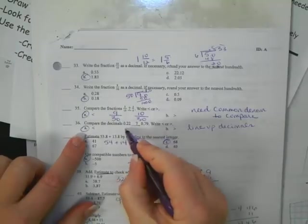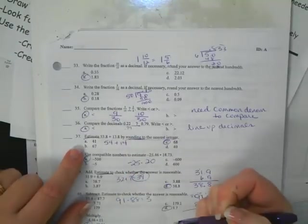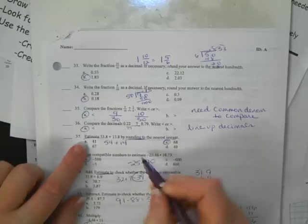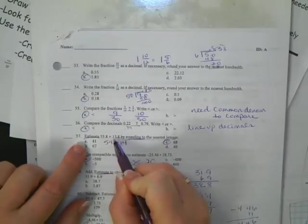Alright, estimating, rounding to the nearest integer, 53.8. That 8, 5 or more, raise the score, 4 or less, let it rest. So these both round up. 54 and 14 gives me 68.